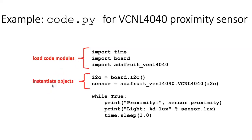Then we need to instantiate objects that are necessary for the functioning of the board. And finally, we read the output of the sensors and report it in some way, either through the serial console through printing, or by saving it on the memory of the board.